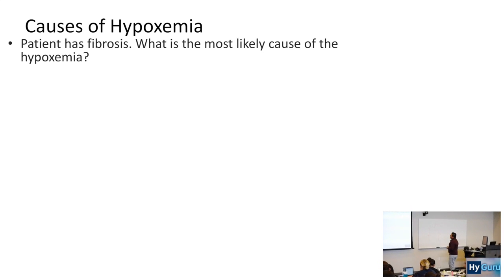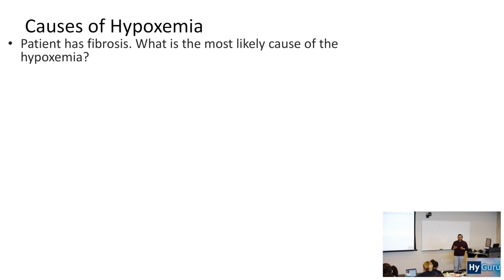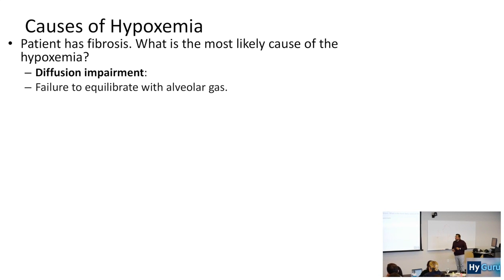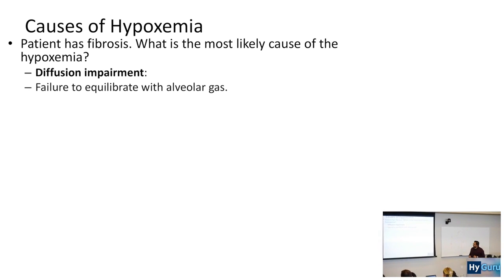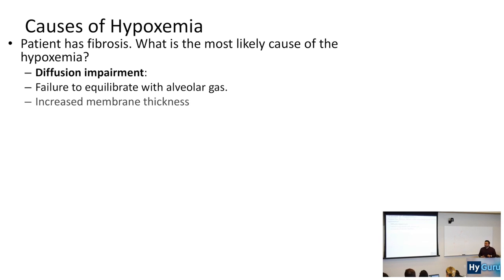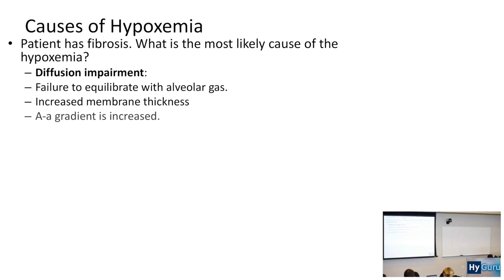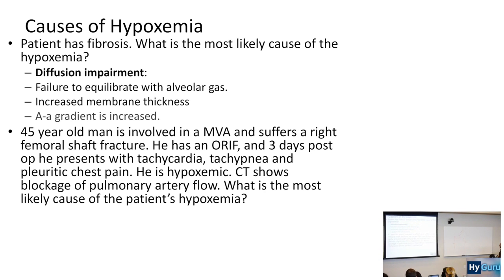A patient has fibrosis — what is the most likely cause of the hypoxemia? We know it's diffusion impairment. What's going on? You have failure to equilibrate with the alveolar gas, and thus you get increased membrane thickness and your A-a gradient is going to be increased. See how simple the A-a gradient is.